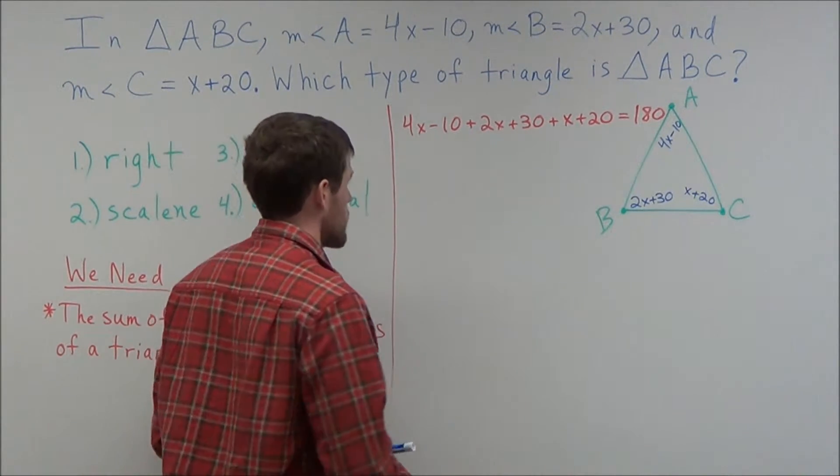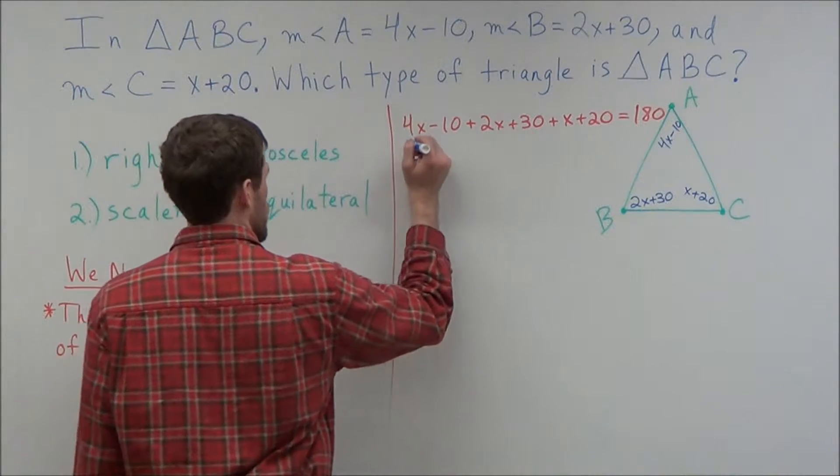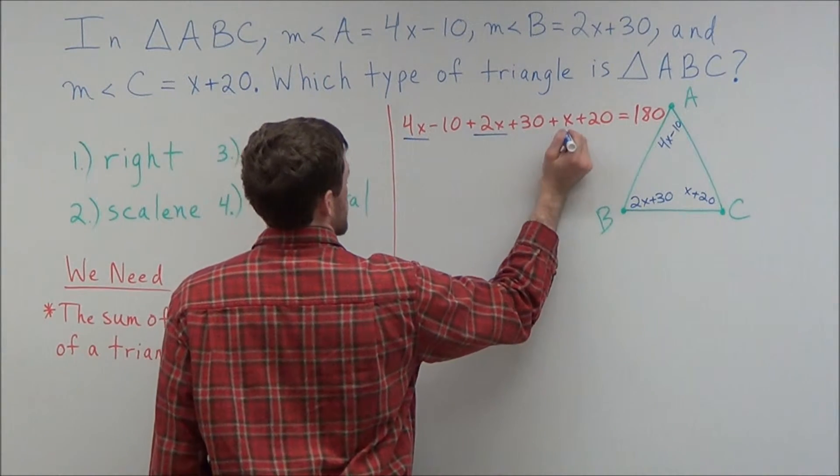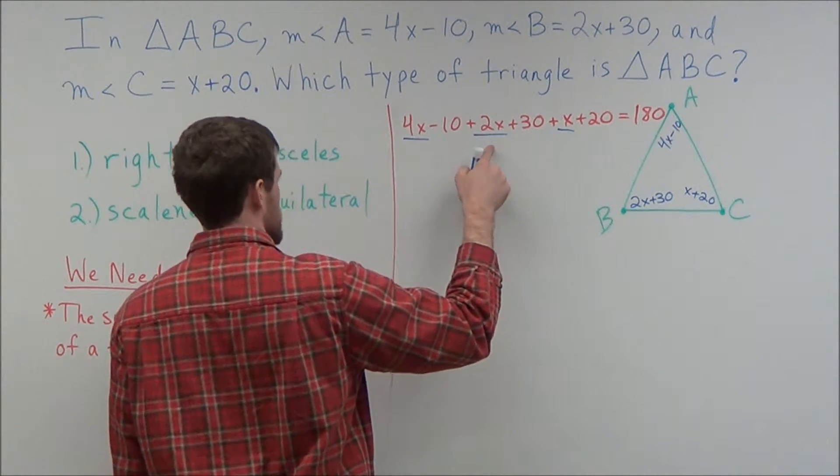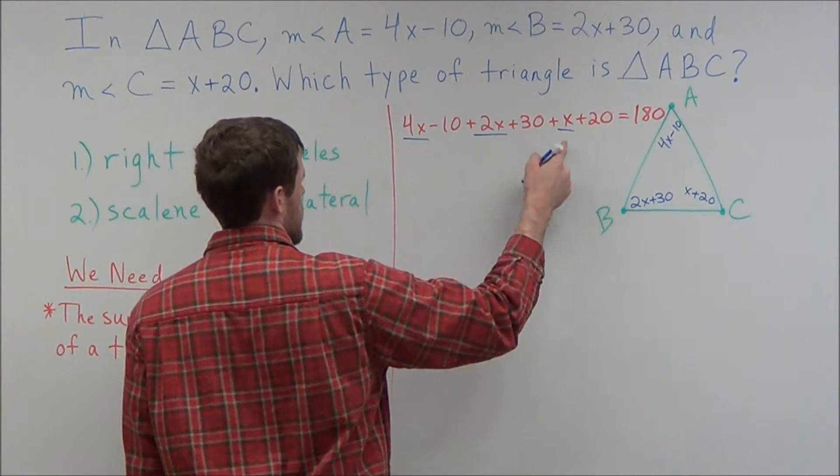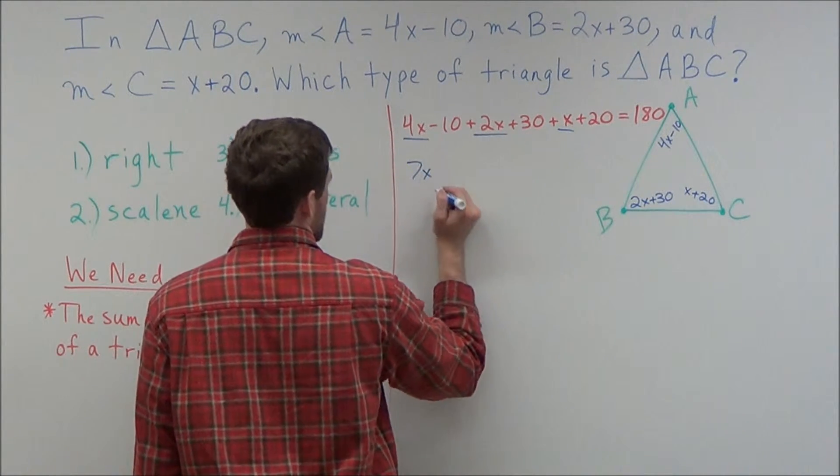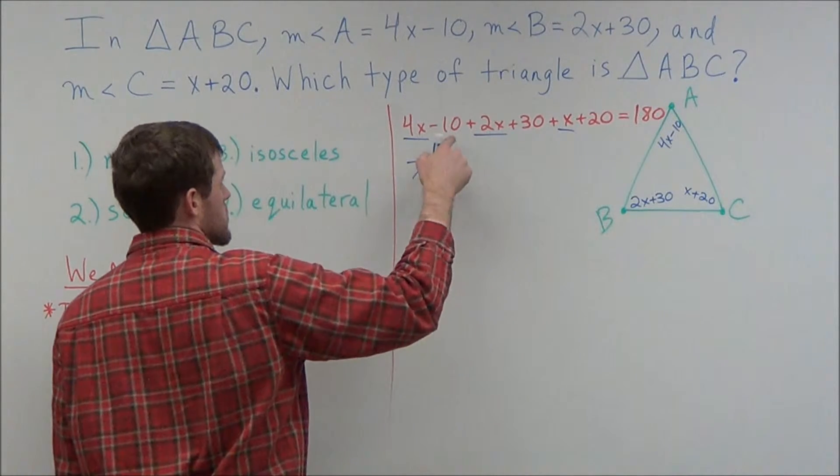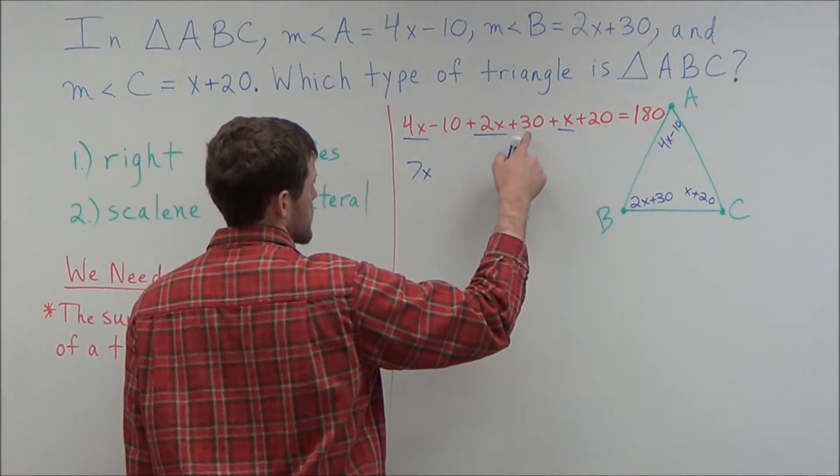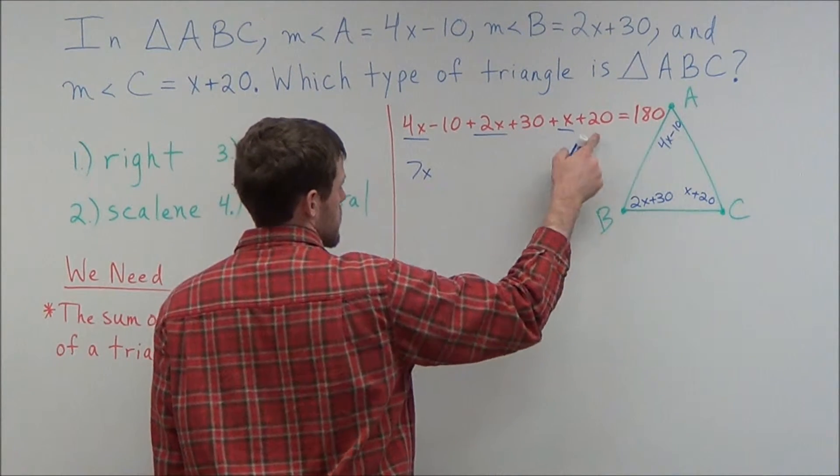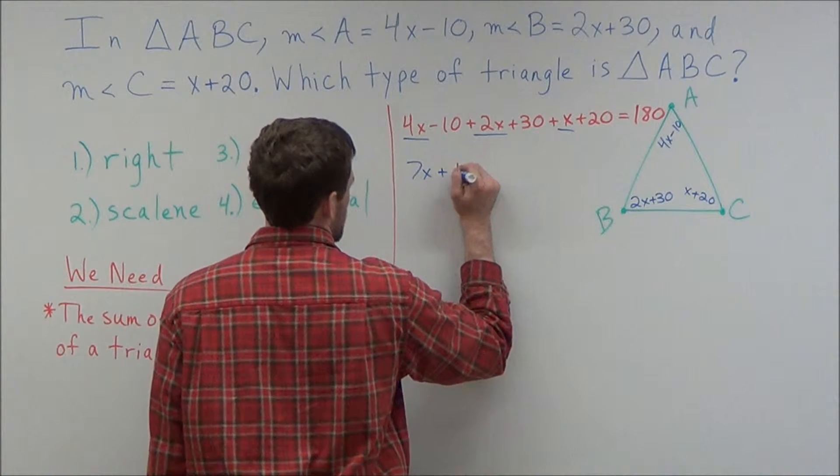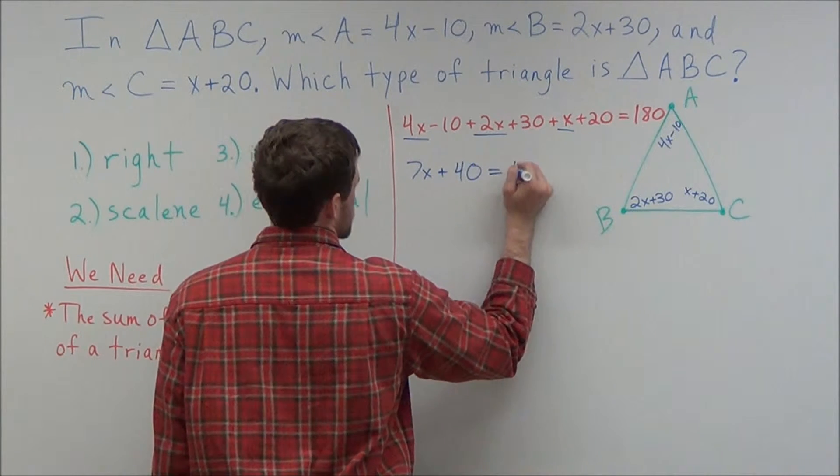So what we can do with this step is combine like terms. We have 4x, 2x, and 1x. 4x plus 2x is 6x. 6x plus 1x is 7x. And now we combine the constants. Negative 10 plus 30 is a positive 20. 20 plus 20 is a positive 40. And now this is still equal to 180.